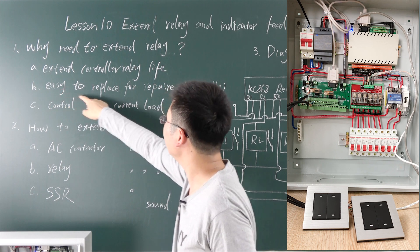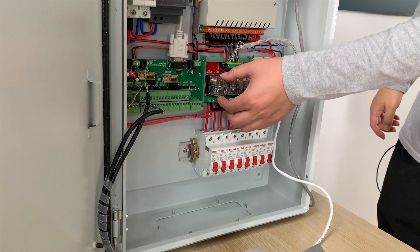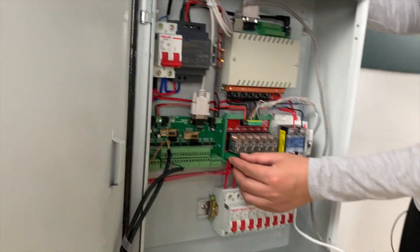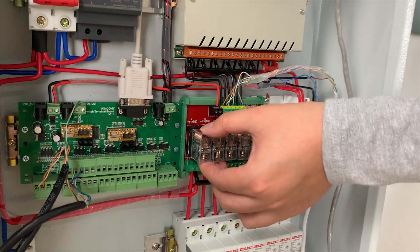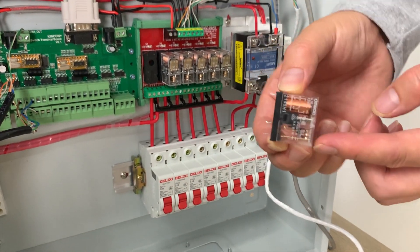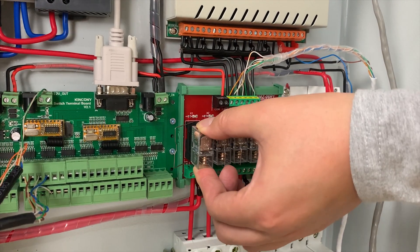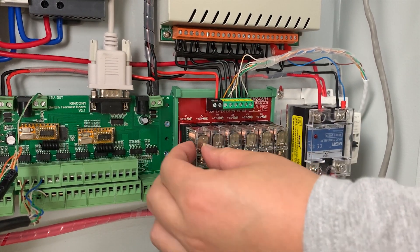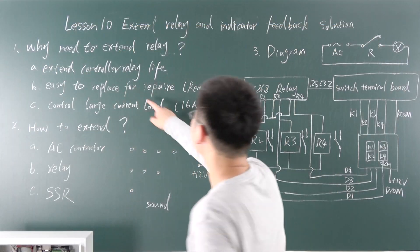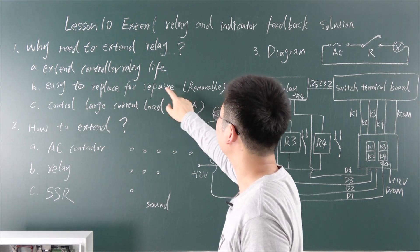The second reason is that it is easy to replace for repair. Because you have this extended relay, if the relay is broken, you just turn off the box power and remove the relay — you can see this is the relay pin socket. Just plug in a new relay. It's very easy to replace by yourself.